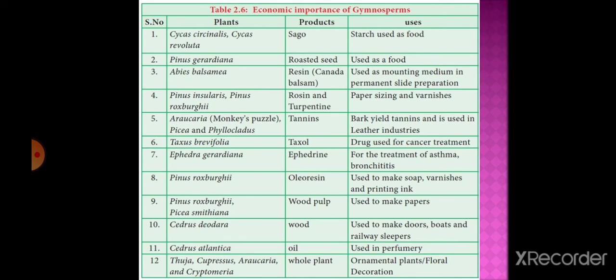Cedrus atlantica produces oil which is used in perfumery. Thuja, Cupressus, Araucaria, and Cryptomeria are used for decorative purposes as ornamental plants. These are the economically important plants among gymnosperms.